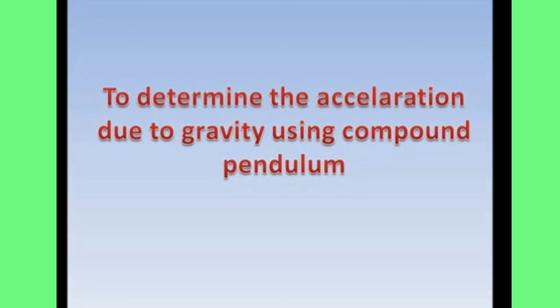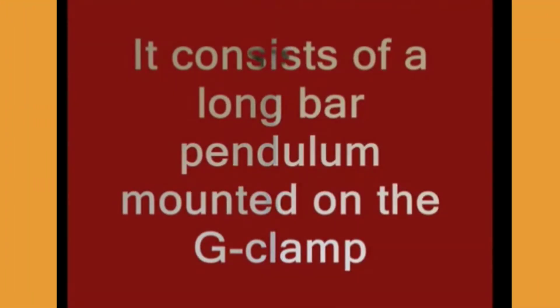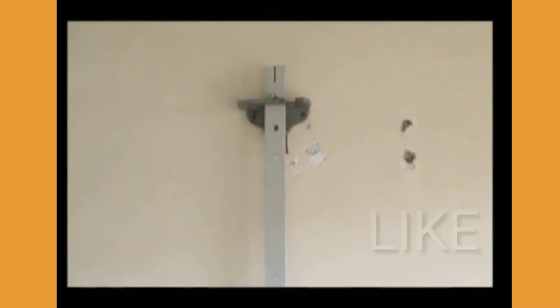Required apparatus: compound pendulum, which consists of a long bar pendulum mounted on the G clamp. It has holes in equal distances, telescope pin, stopwatch, and G clamp.